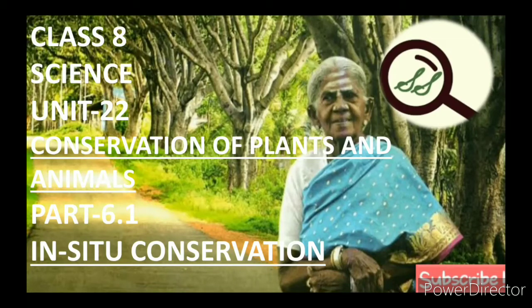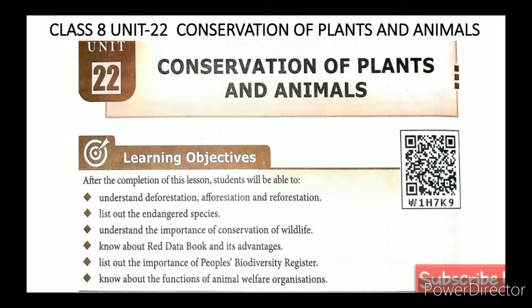Welcome students. Class 8 Science, Unit 22: Conservation of Plants and Animals, Part 6.1 - In-Situ Conservation. The learning objectives are: understand deforestation, afforestation, and reforestation; list out the endangered species; understand the importance of conservation of wildlife; know about the Red Data Book and its advantages; list out the importance of People's Biodiversity Register; and know about the functions of animal welfare organizations.